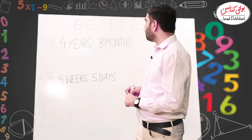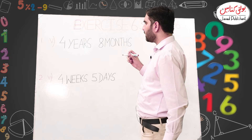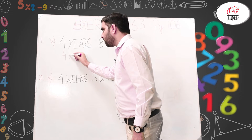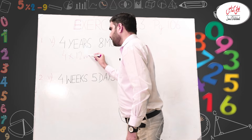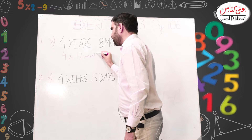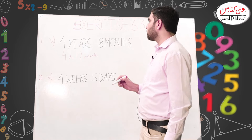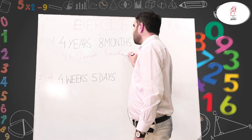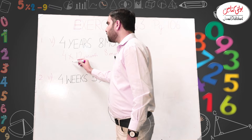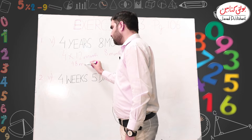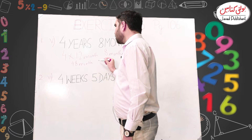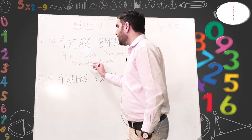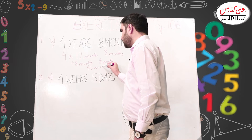Question number one, part five: four years eight months. What are we going to do? Four years — as I have told you — four multiplied by twelve months, because one year has 12 months. These eight months remain as they are because they are already months. So four multiplied by 12 gives us 48 months, and 48 plus 8 equals 56 months. This is our answer.